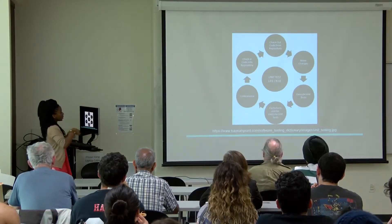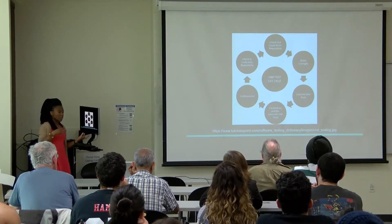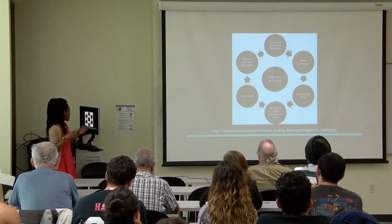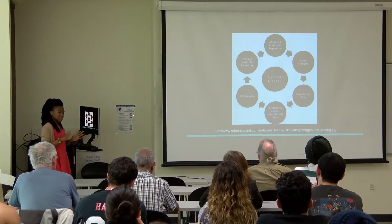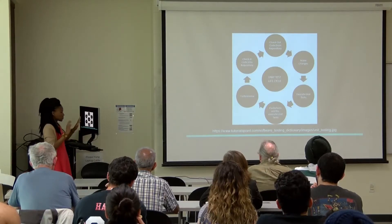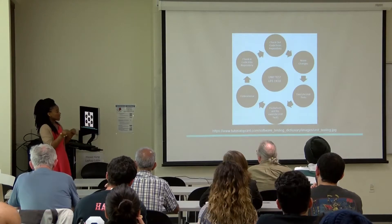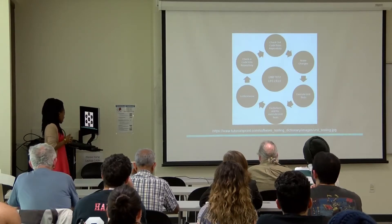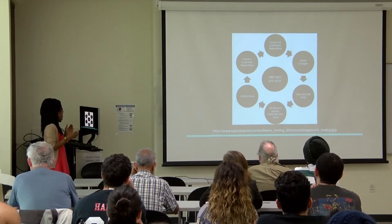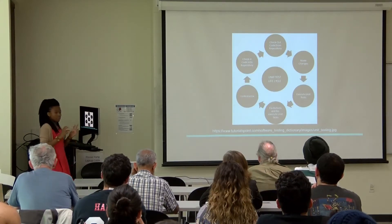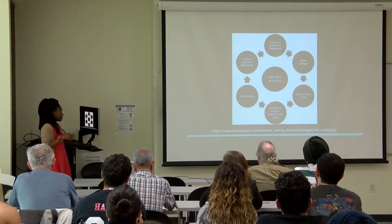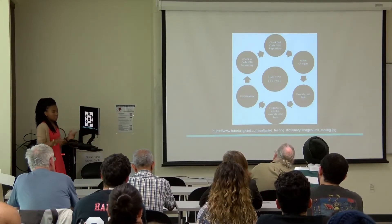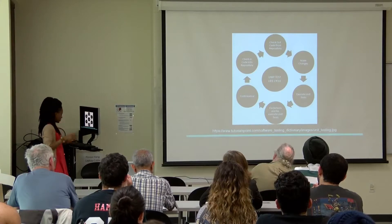This is just a diagram explaining the flow of how unit testing works. Basically you get the code from — we use Bitbucket, so I get the code from Bitbucket. This is how unit testing works when doing it the standard way, but I skip the make-changes steps and I execute the unit tests. Then I find the defects, fix them if applicable, and then review the code with Dr. Revoir to make sure that everything's working, and then check it back in.